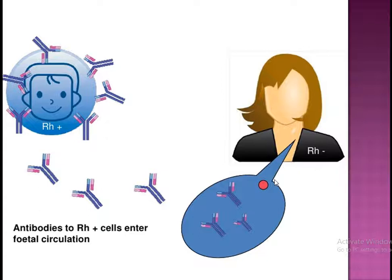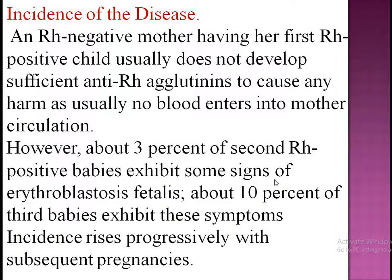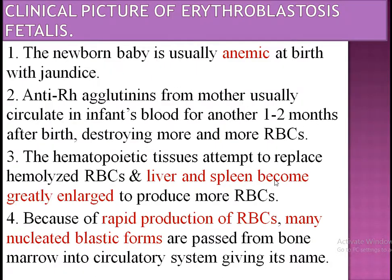Actually, erythroblastosis fetalis is the extreme of this antigen-antibody reaction, which can happen even during the first pregnancy if antigens cross during pregnancy and produce antibodies in the mother, which then come back to the fetus. Usually this does not happen, but it may. In succeeding pregnancies the chances increase. The RH negative mother having her first RH positive child usually does not develop sufficient anti-RH agglutinins to cause harm, as usually no blood enters into the mother's circulation — but it is not fixed, it may happen. Clinical pictures may include simple anemia, anemia with jaundice, or greatly enlarged liver, all depending upon the severity of the antigen-antibody reaction.